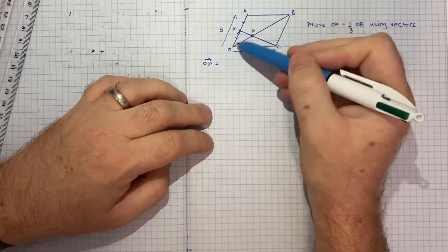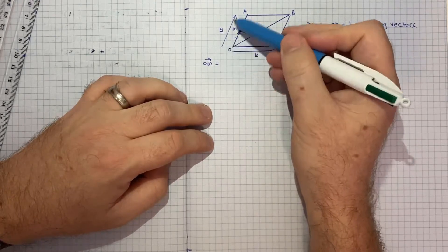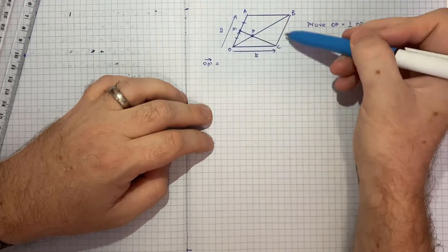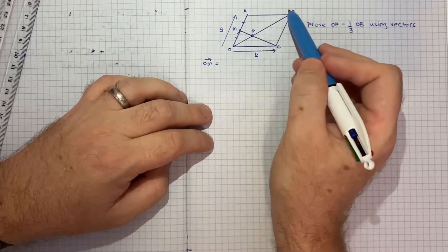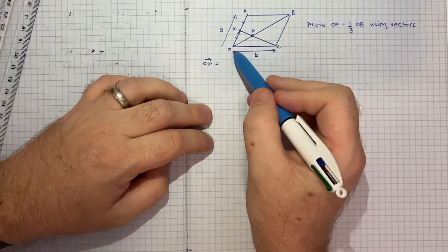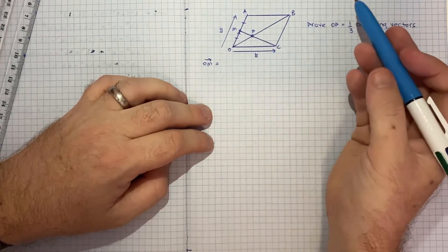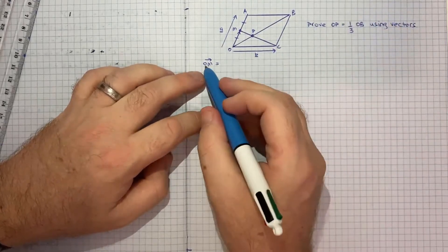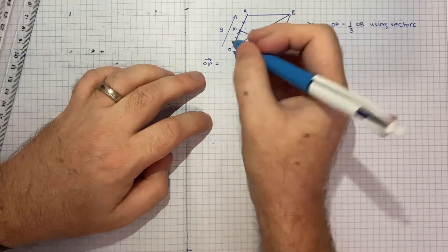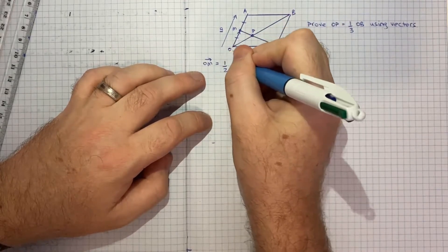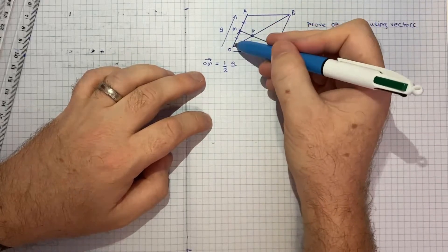Actually maybe what I'll do to make a lot of this easier is let's define vector OA. Let's just define that as A vector and maybe we'll define this vector OC. We'll call that B vector and that'll just make a bit of the notation a little easier. Hopefully you can see given it's a parallelogram, OA being A vector, CB would also be A vector and AB would also be B vector because they're same magnitude same direction. We know OM that vector will be a half of A vector because we're told M is the midpoint of OA.